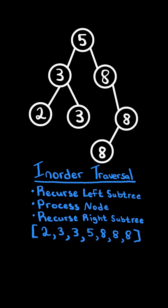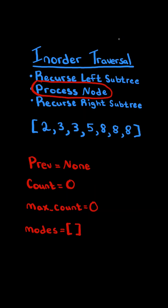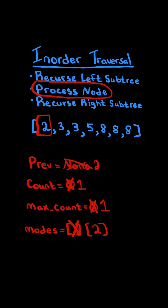Consider the in-order traversal for this example. As we traverse through the tree, we will modify the step where we process the node. We initialize four variables: previous, count, max count, and modes. As we process the node in the in-order traversal, we check: is previous equal to the current value? In this case it's not, so we set the count to 1. If count is greater than max count, we set max count equal to count and reset the mode list to the current value. Lastly, we update previous to the current value and continue to process the next node.